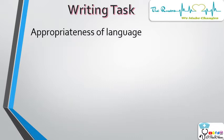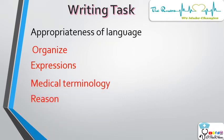The second criteria is appropriateness of language, divided into four points: organize, expression, medical terminologies, and reason. Organize means structuring your paragraphs so that the person you are writing to — whether another nurse, a social worker, or another professional — can understand the letter and provide the proper care and treatment to the patient. While there is no mandatory format, the letter must be presentable and understandable by the recipient.